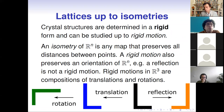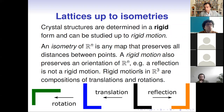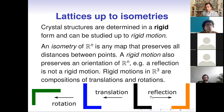Our main motivation to consider lattices up to isometries comes from crystals, because crystal structures are determined in rigid form. That's why it's very natural to study them up to rigid motion. An isometry is a slightly more general concept but also includes reflections in planes in the three-dimensional case. For two-dimensional examples you see rotation, translation, and reflection. Any orientation-preserving isometry can be represented as a rigid motion, or as a composition of translations and rotations.